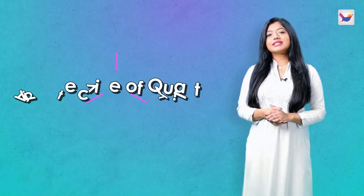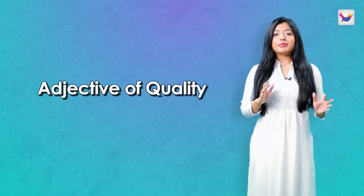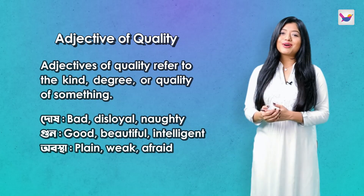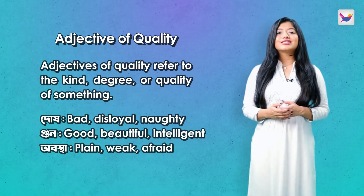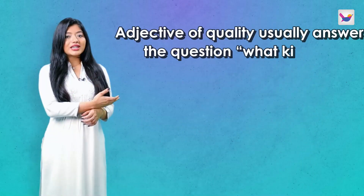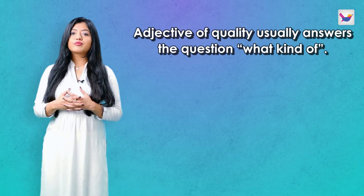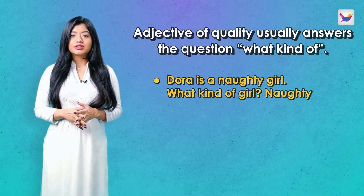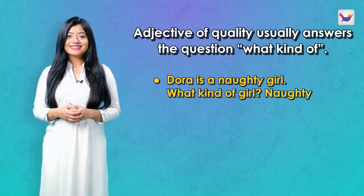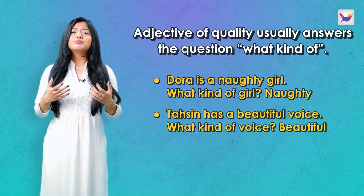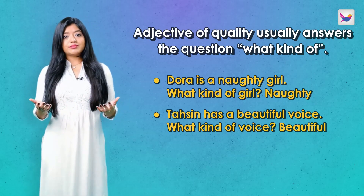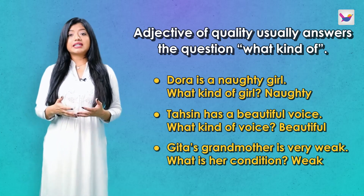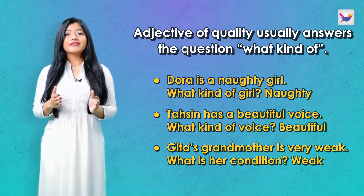Adjective of Quality usually answers the question 'what kind of.' Dora is a naughty girl — what kind is Dora? Answer: naughty. Taasin has a beautiful voice — what is Taasin's voice like? Answer: beautiful. Gita's grandmother is very weak — answer: very weak.